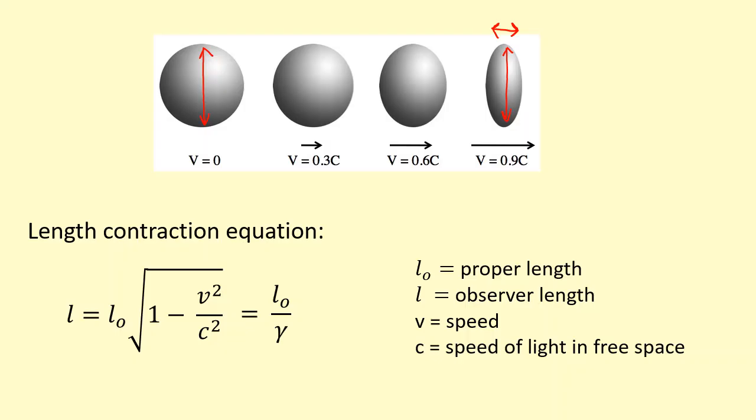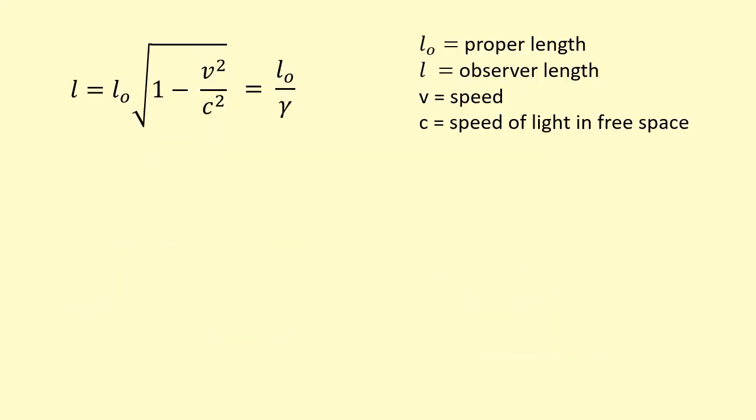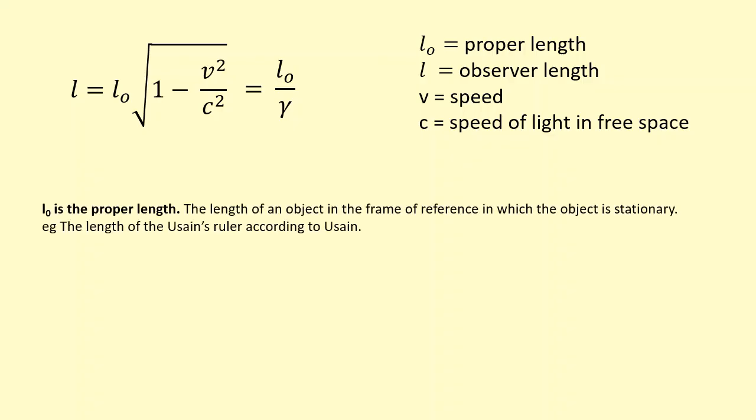But this time the Lorentz factor is dividing the proper length. To avoid confusion between the proper length and observed length, I'm going to give you some examples. The proper length is the length of an object in the frame of reference in which the object is stationary.